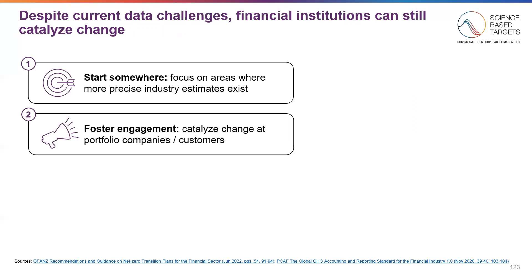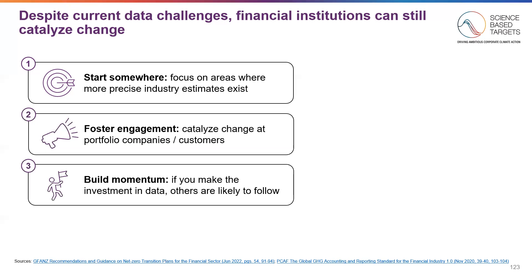Financial institutions can foster engagement by catalyzing change at their portfolio companies or with customers, especially those using the temperature reading approach. They can focus and use their influence on companies who are the heaviest emitters within their portfolios. By doing this, financial institutions will build momentum — as you make investments in data, others are likely to follow. Financial institutions can also embed data quality requirements into future processes such as underwriting at banks, and follow up with investees or clients on their progress to ensure they are setting their own targets and tracking their own data.